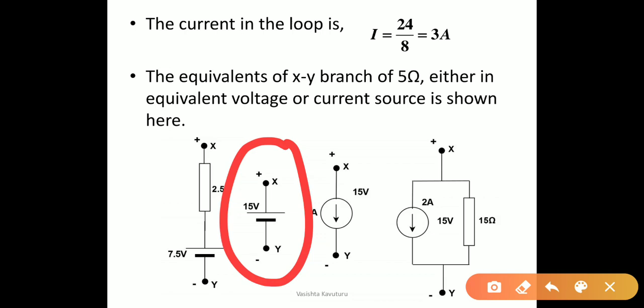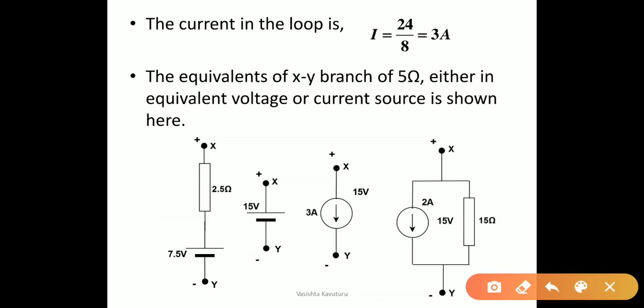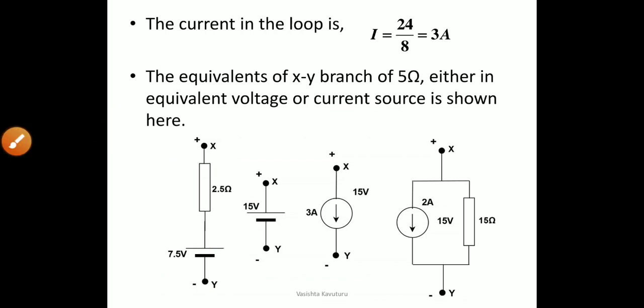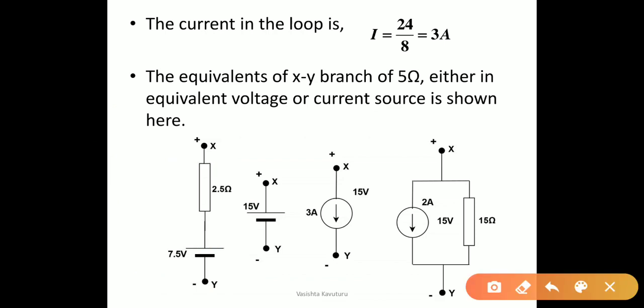We can represent the XY terminals either in terms of a voltage source or a current source with magnitudes of 15 volts and 3 amperes respectively. Since the voltage across the terminals XY is known as 15 volts, the 5-ohm resistance can be replaced with a voltage source of 15-volt magnitude. Or we can also replace the 5-ohm resistance with 7.5 volts connected in series with a 2.5-ohm branch.